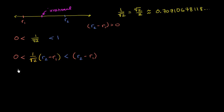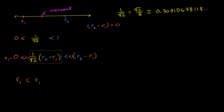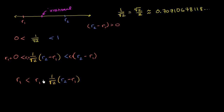Now we just have to shift everything over by adding r1 to all sides of the inequality — that won't change the inequality either. So on the left-hand side we have r1, in the middle we have r1 plus 1 over the square root of 2 times r2 minus r1, and on the right-hand side r1 plus r2 minus r1 is just r2. So we have r1 is less than that expression, which is less than r2.